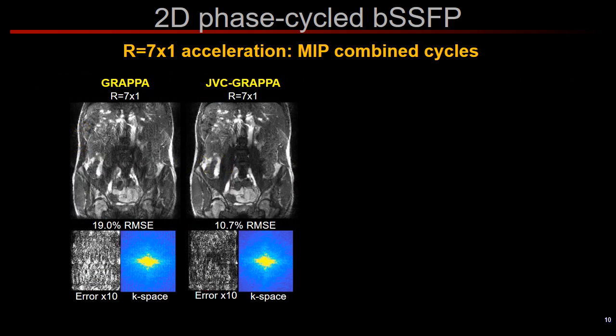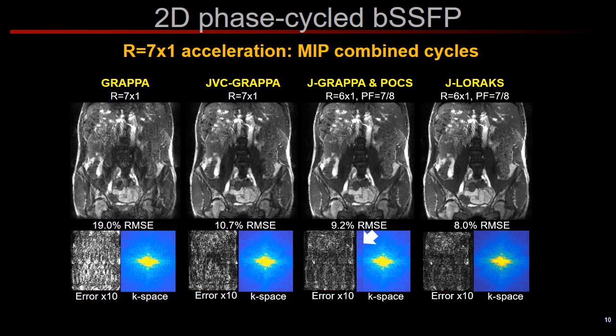When we push the acceleration further to R=7, even JVC-GRAPPA begins to incur large RMSE values. But we can achieve the same net acceleration factor by combining partial Fourier sampling and 6-fold uniform undersampling. Since virtual coil is no longer applicable due to asymmetric sampling in partial Fourier acquisition, we combined Joint GRAPPA with POCS reconstruction instead. This provided some RMSE improvement, but the unacquired part of k-space was underestimated, as pointed out by the white arrow. Since J-LORAX flexibly handles partial Fourier sampling, it provided the best reconstruction and avoided this underestimation issue.